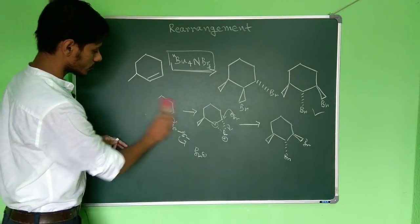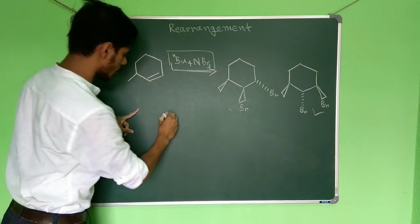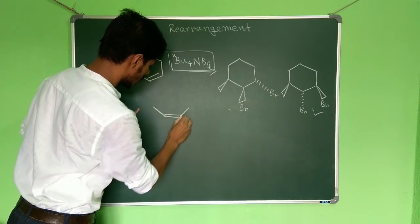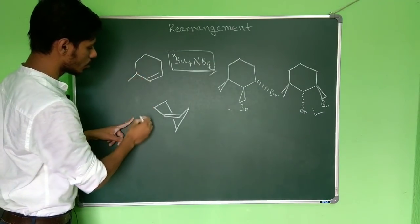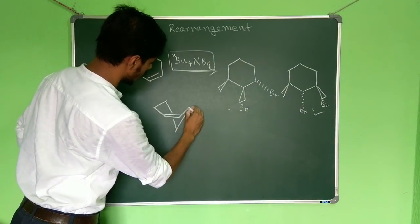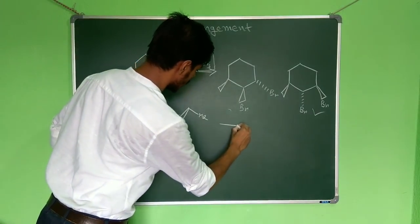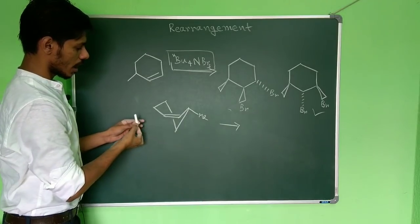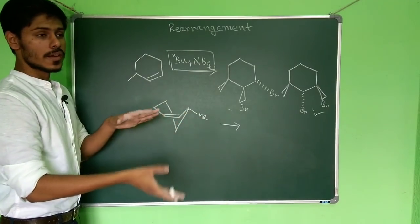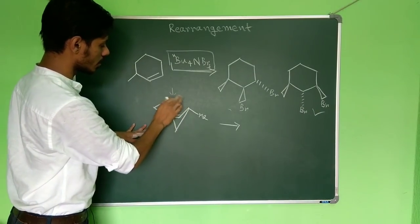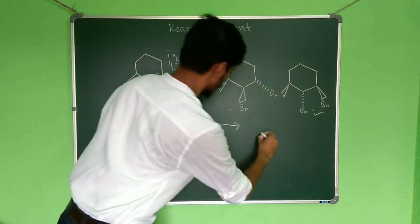The correct way is to draw it in the half-chair form. In the half-chair form of this molecule, the methyl group is placed in the pseudo-equatorial position. Since the methyl group is in the pseudo-equatorial position, bromine can come from either side, but because the methyl group blocks one face, it will come from the reverse face — from the top side — giving the cyclic bromonium ion.